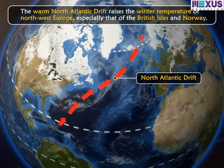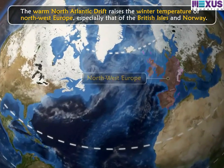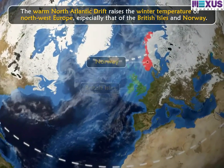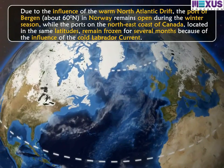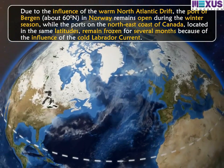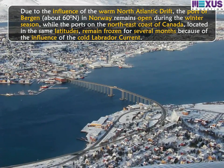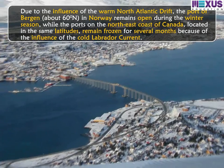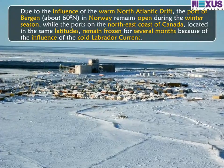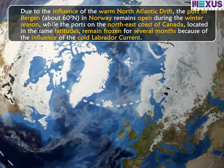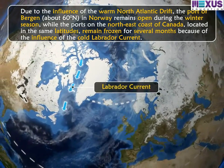The warm North Atlantic Drift raises the winter temperature of Northwest Europe, especially that of the British Isles and Norway. Due to its influence, the port of Bergen, about 60 degrees north in Norway, remains open during the winter season, while ports on the northeast coast of Canada, located in the same latitudes, remain frozen for several months because of the influence of the cold Labrador Current.